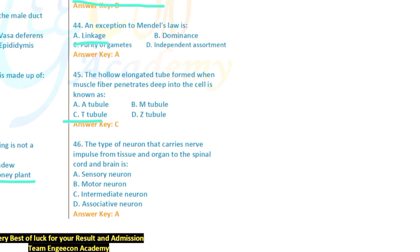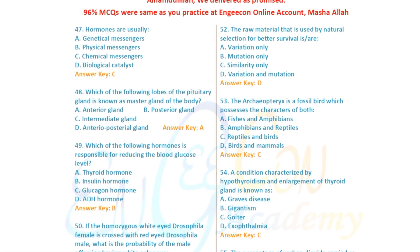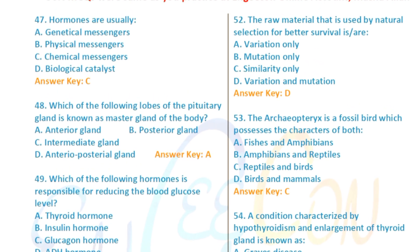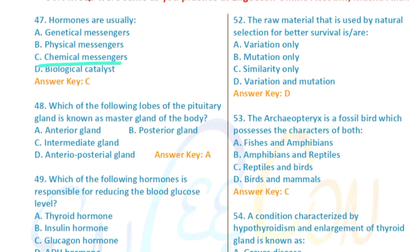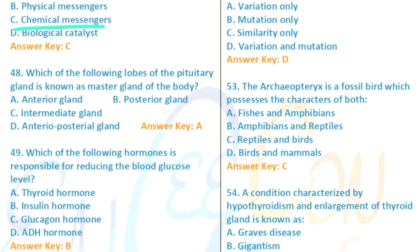Question 46: The type of neuron that carries nerve impulses from tissues and organs to the spinal cord is the sensory neuron — sensory neurons carry messages to the spinal cord and brain.